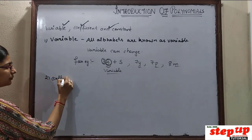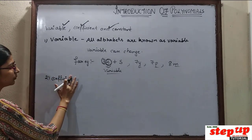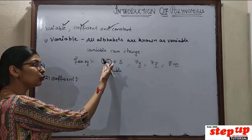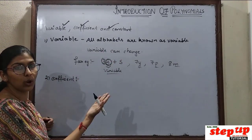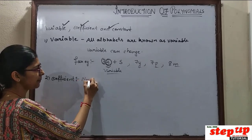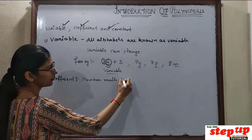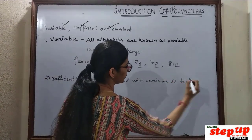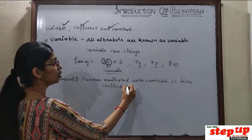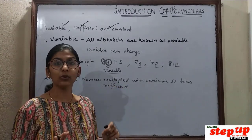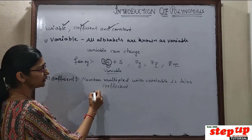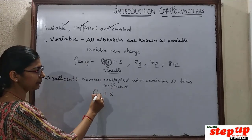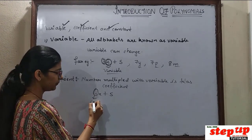Next, we will do coefficients. Now the coefficient — it is also simple in language. For example, let's say you have 7x plus 5. The variable here is x. The number attached to it — what number is that number? That is the coefficient. 7 is the coefficient.